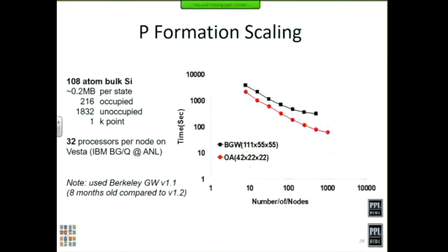We have another set from a slightly larger dataset — twice the atoms and approximately twice the memory per state, also silicon — and again the OpenATOM scales pretty well out to 1,000 nodes on Vesta.